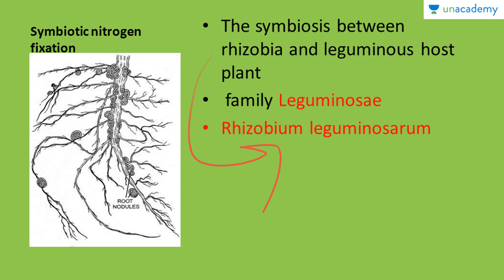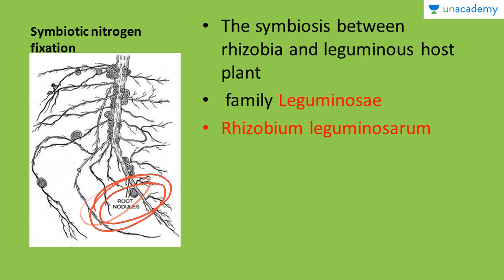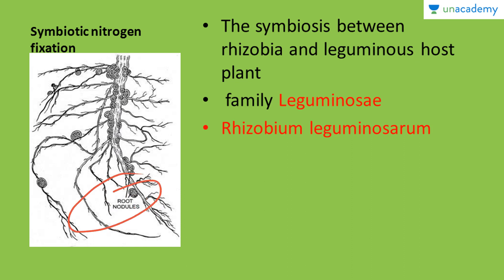Rhizobium leguminosarum is the complete name of this bacteria. You can also see in this diagram that these are the roots of leguminous plants, where nodule formation is taking place. We will now see how these nodules are formed and how they help in the fixation of nitrogen.